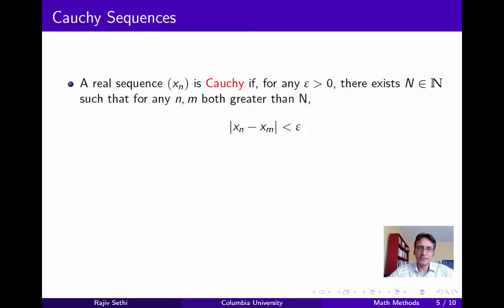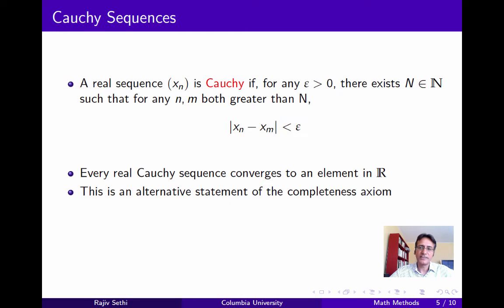Next we define Cauchy sequences. We say that a real sequence is Cauchy if for any epsilon positive, there exists a natural number N such that once you get past the N-th term, every pair of terms is within epsilon of each other. Since this condition doesn't depend on knowledge of the limit, it's often easier to verify than convergence directly. An alternative way of stating the completeness axiom is that every real Cauchy sequence converges to an element in R.